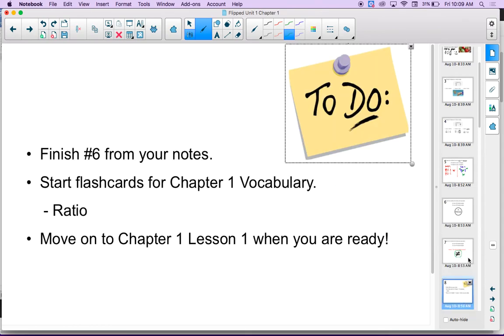Okay. So, that's it for today. Here is your to-do list. First, I want you to finish number 6 from your notes. This is a question where you're going to write your own problem. Write your own problem. We'll talk about them tomorrow in class. Next, you are going to start your flashcards for Chapter 1. First flashcard. First word is the word ratio. We have a definition. Use it. Make a flashcard. And then move on to Chapter 1, Lesson 1 when you are ready. See you later.